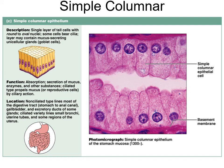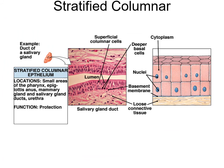Simple columnar epithelium is more for absorption - it's hard to make out microvilli, and the center represents the lumen. Mucus cells inside produce a lot of mucus. It's found lining most of the digestive tract from the stomach to the anus, and also lines the gallbladder and some ducts of glands. The ciliated variety lines small bronchi, uterine tubes, and some regions of the uterus. Stratified columnar is found in the pharynx, epiglottis, mammary glands, salivary glands, and urethra.